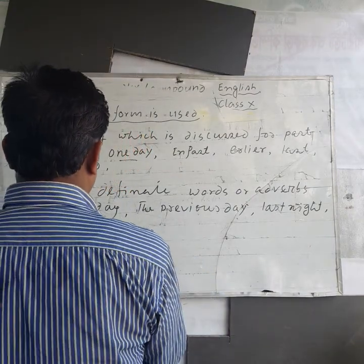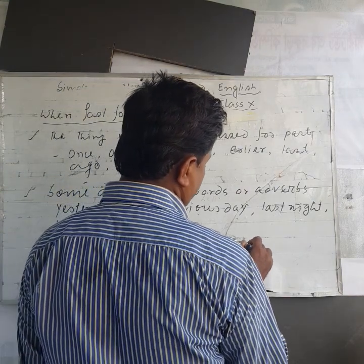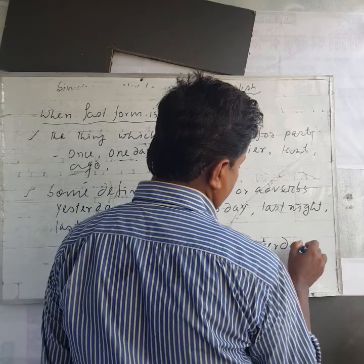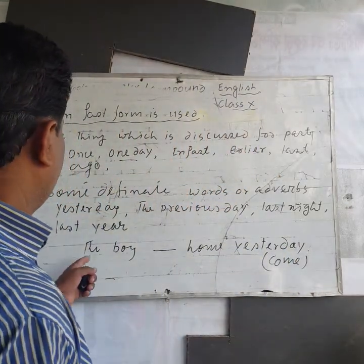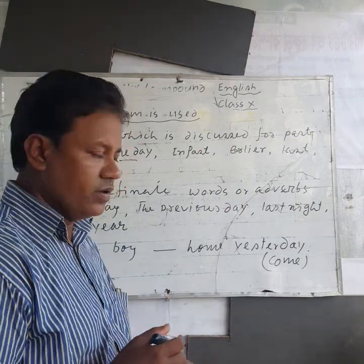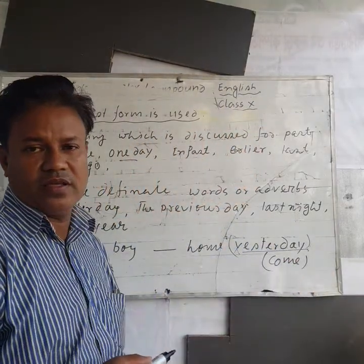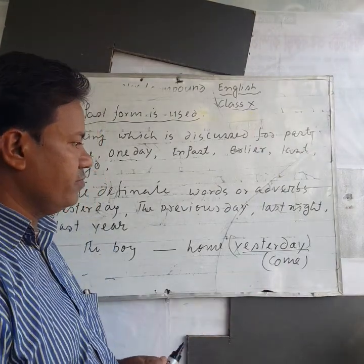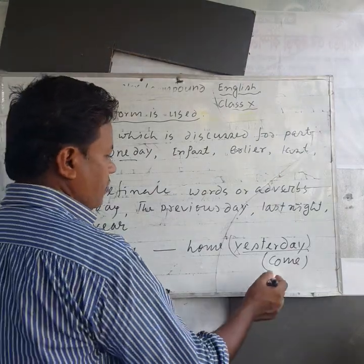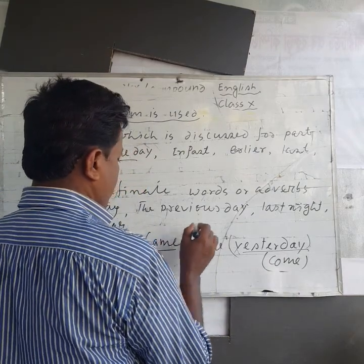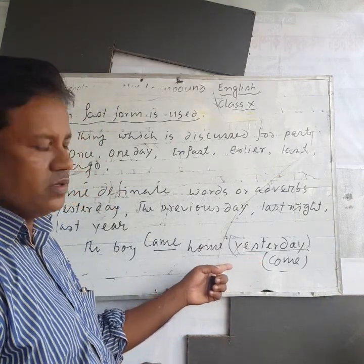The boy ___ whom yesterday. Dear students, please follow the sentence. 'The boy came yesterday.' Here is a particular adverb of first form — 'yesterday.' Then you instantly and simply take the decision it will be past tense — that means 'came' — because here is a particular adverb of first form.